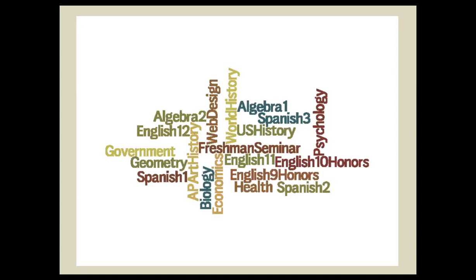What types of classes do we offer? I created this Wordle to model a tool many of our teachers use. We have courses in English Language Arts: English 9, 10, 11, and 12 — because California requires four years of English to graduate — plus honors-level English 9 and English 10. We also offer history courses: World History at the 10th grade level, US History at the 11th grade level, and a semester of Government and a semester of Economics at the 12th grade level.